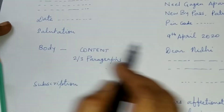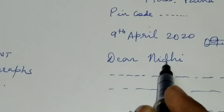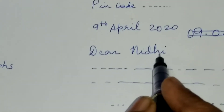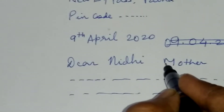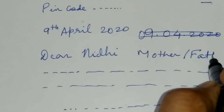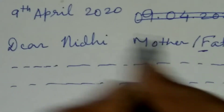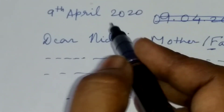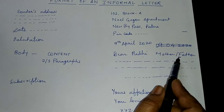Then comes the salutation. It should be 'Dear' followed by the name — Dear Mother, Dear Father, or the name of your friend, for example Dear Nidhi. If you are writing to your mother, then 'Mother' will have a capital M. If you write 'father,' F will be capital. It is treated as a proper noun, so it will always begin with a capital letter.